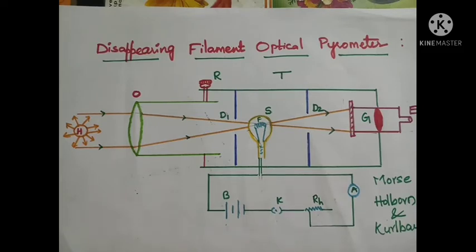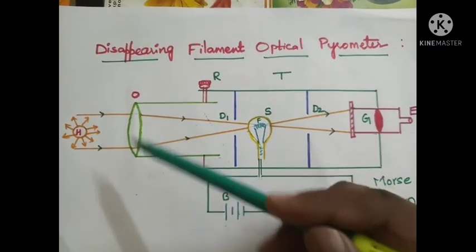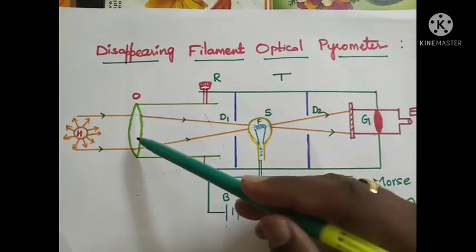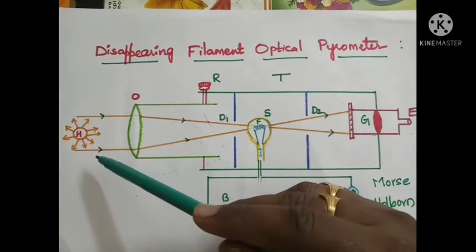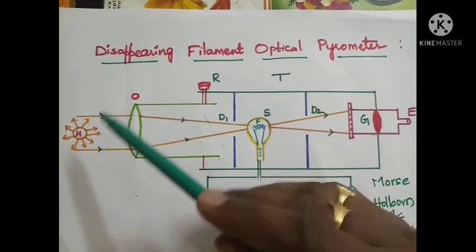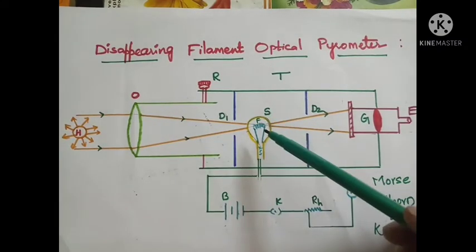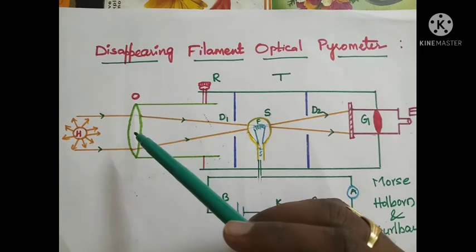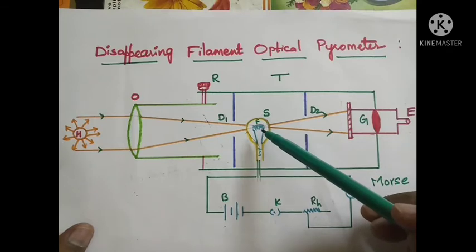Now let us see the working of this instrument — how we can measure temperature with it. The objective lens of the pyrometer is directed towards the hot body H. With the help of the screw, the position of the objective is adjusted so that the image of the hot body is focused on the filament.